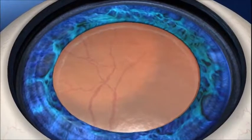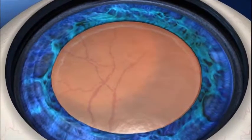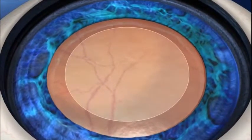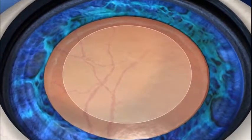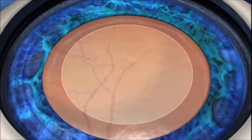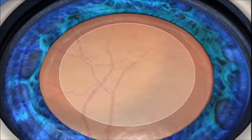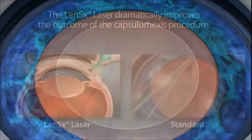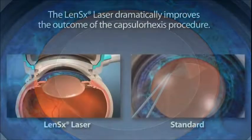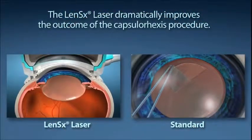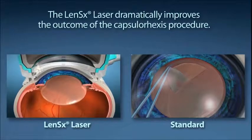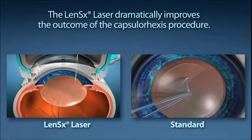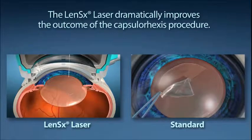Capsulorrhexis is the medical term used to describe the removal of the outer layer of the lens in order to allow the surgeon access to removing the cataract. This is the single most important step in your visual outcome. In standard cataract surgery, this step is performed by the surgeon manually creating a circular opening with a handheld instrument.